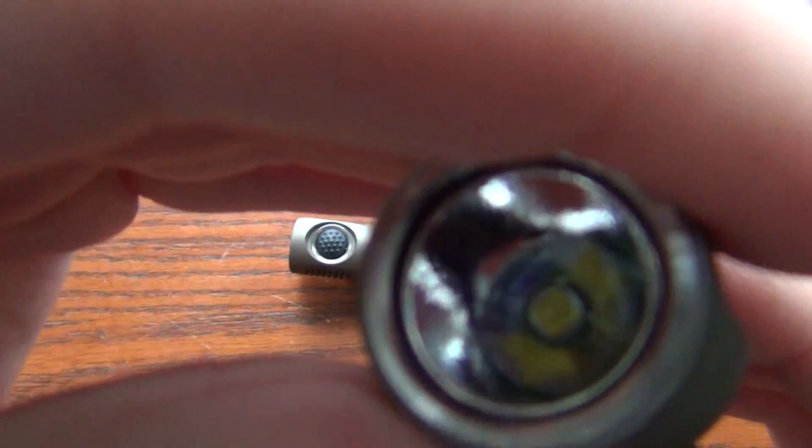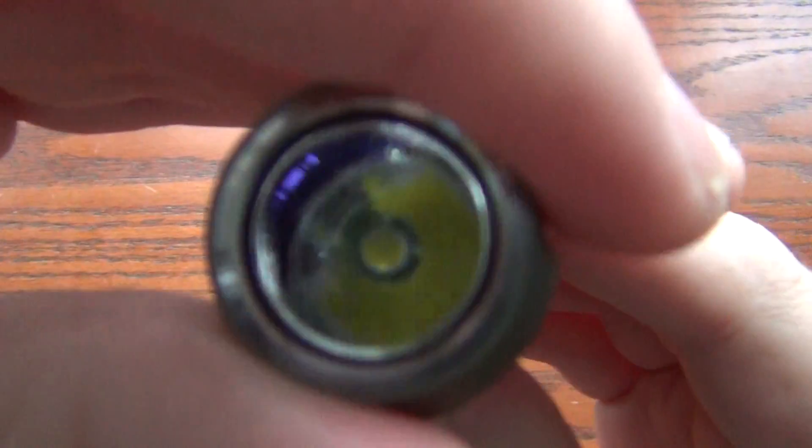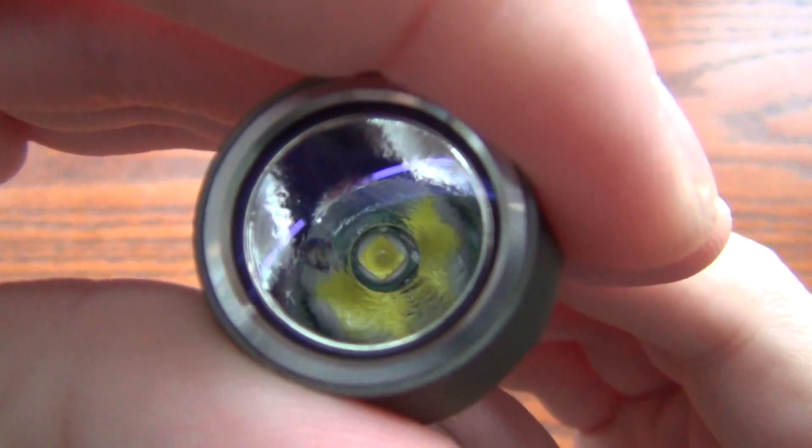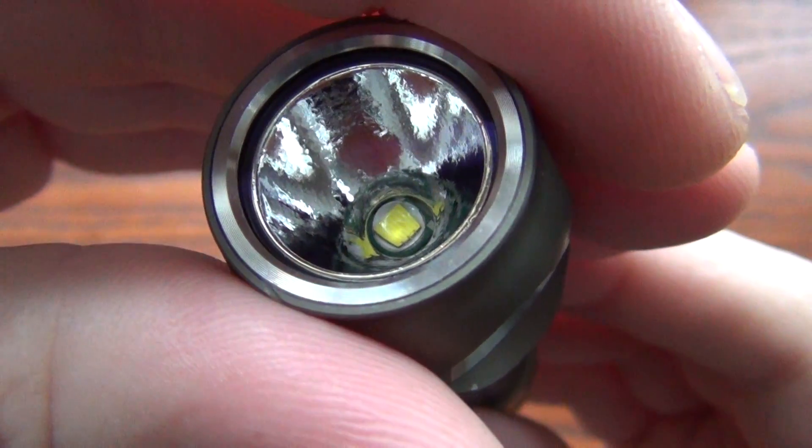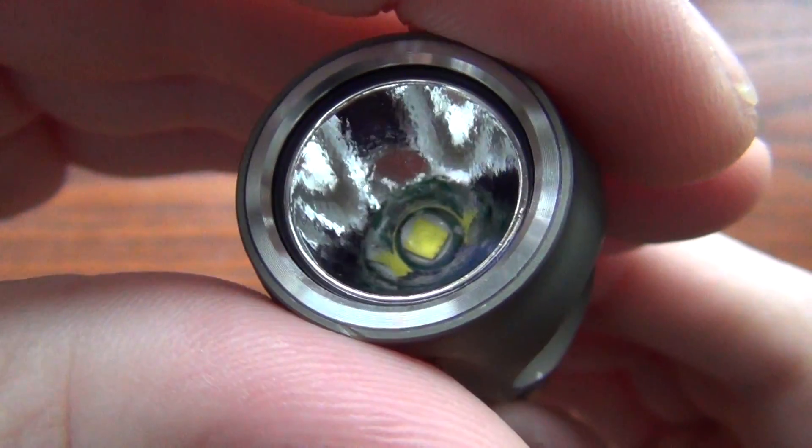Orange peel reflector. If we can get this to focus. There we go. XML. So it's got a bigger emitter in it, which will give you a floodier beam. And this is the cool white version.